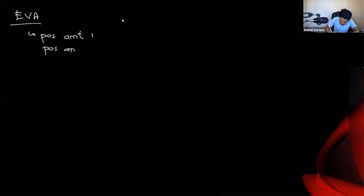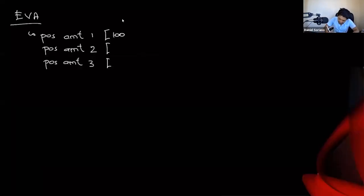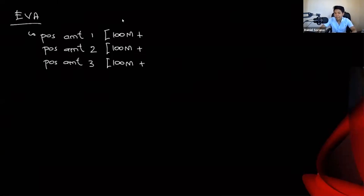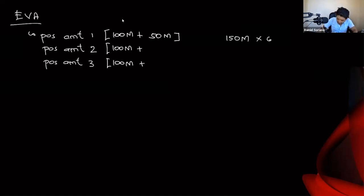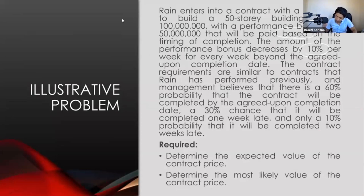We have three possible amounts. The 100 million is fixed — that will be received regardless. What is conditional is the performance bonus. Possible amount one: if the project is completed on the agreed-upon completion date, the full 50 million bonus is received, so the total is 150 million, with a 60% probability.